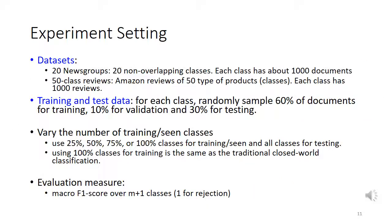We use two datasets for experiments. The 20 Newsgroups dataset has 20 non-overlapping classes. The 50-class reviews dataset contains Amazon reviews of 50 types of products. For each class, we randomly sample 60% of documents for training, 10% for validation, and 30% for testing. We vary the number of training known classes, using 25%, 50%, 75%, and 100% of classes for training while testing on all classes. Using 100% of classes for training is the same as traditional closed-world classification. Our evaluation metric is the macro F1 score over M+1 classes, where the additional class accounts for rejection.